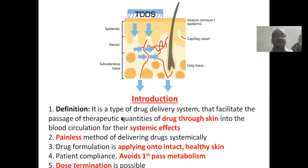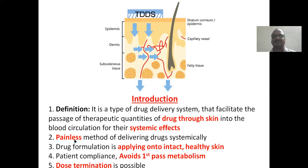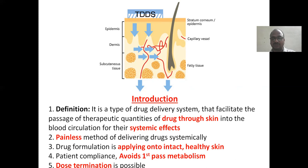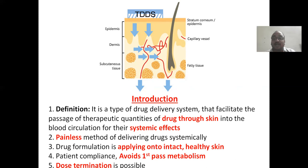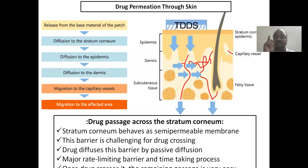Definition: Transdermal drug delivery system is a type of drug delivery system that facilitates the passage of therapeutic quantities of a drug through the skin into systemic circulation. These are painless methods — no pain, no needle. The drug formulation (patch) is applied onto healthy skin. It avoids first-pass metabolism, and dose termination is also possible — you can remove the patch when you get relief from pain, unlike a tablet where the drug cannot be taken back.